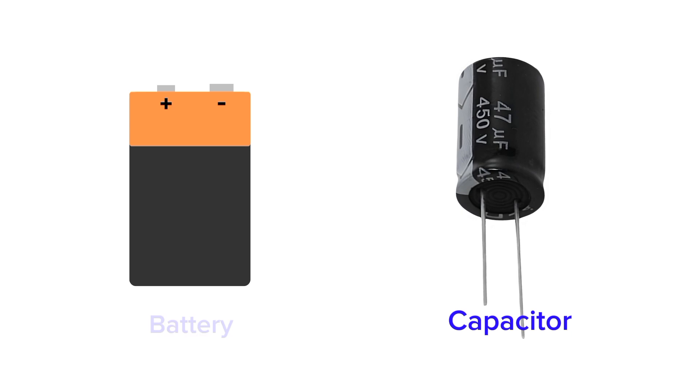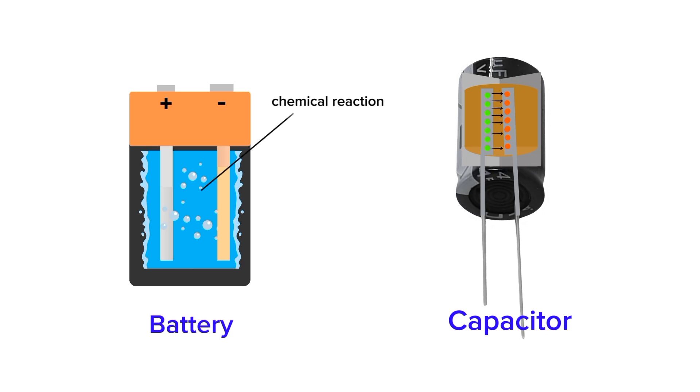A capacitor is similar to a battery in that both store electrical energy, but while batteries store electrical energy through chemical reactions, capacitors store energy in an electric field.